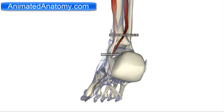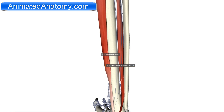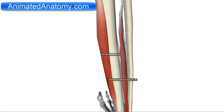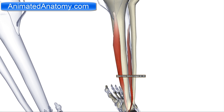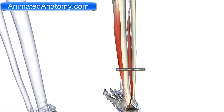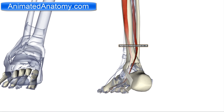The origin of the flexor hallucis longus is clearly different — it is the fibula, not the tibia. The innervation is the same; it is also innervated by the tibial nerve. It serves as a flexor of all joints of the hallux and also for plantar flexion of the ankle joint.